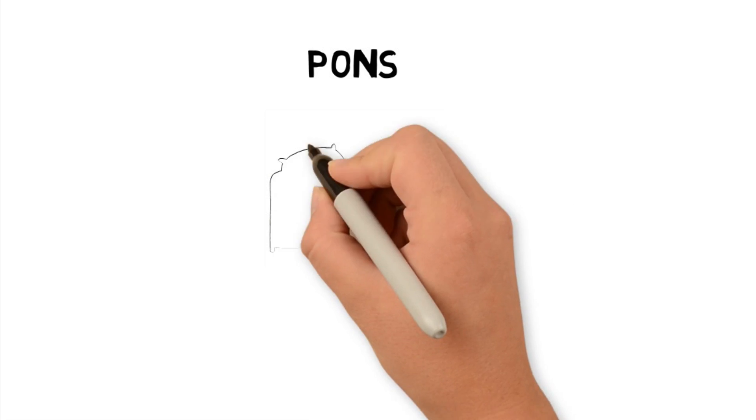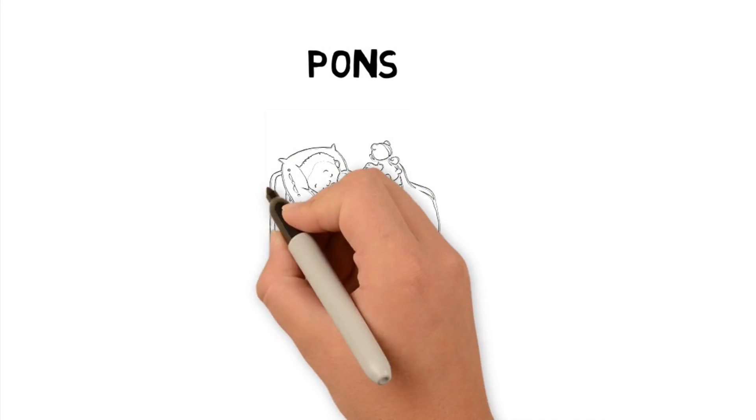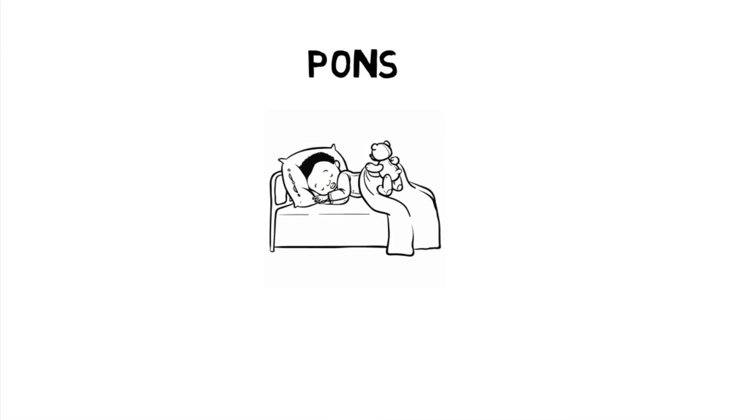Right above the medulla, you have the pons. The pons is a bit of a mystery, but we know it helps link the old brain to the newer structures above. It's also involved in sleeping and dreaming.